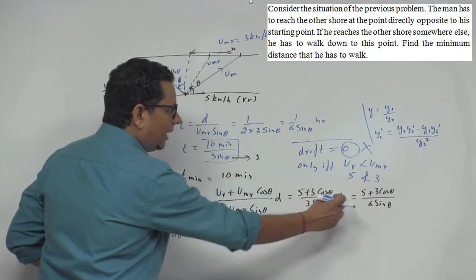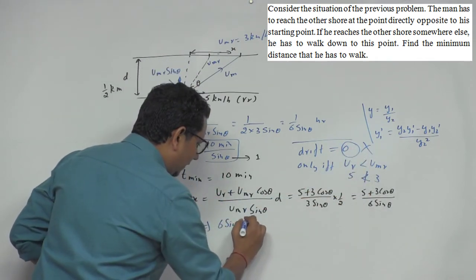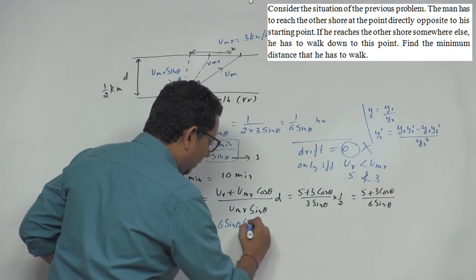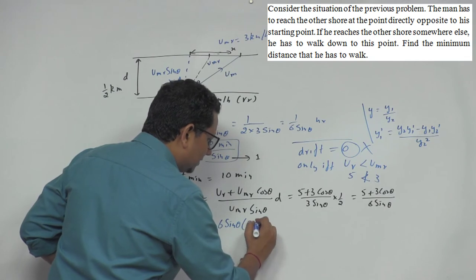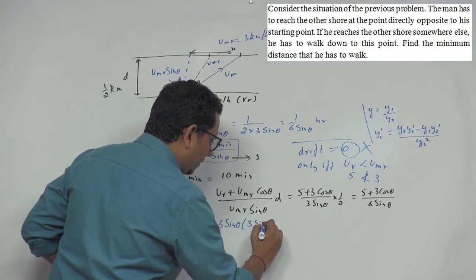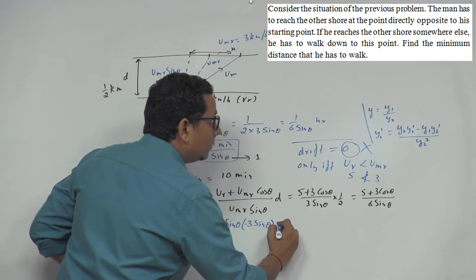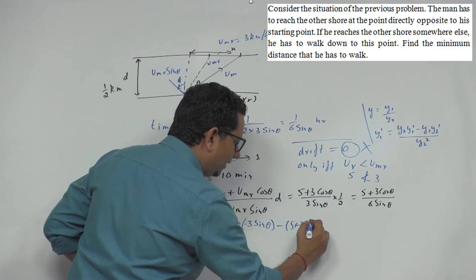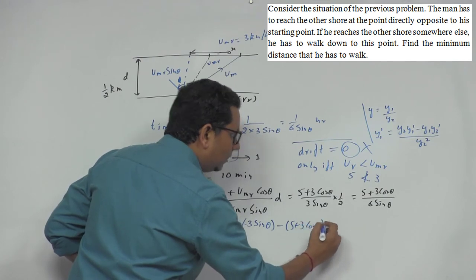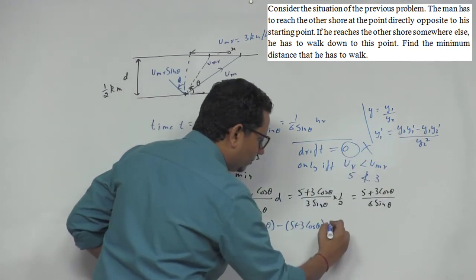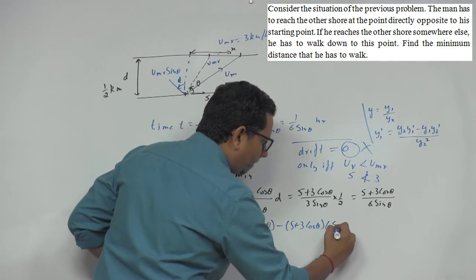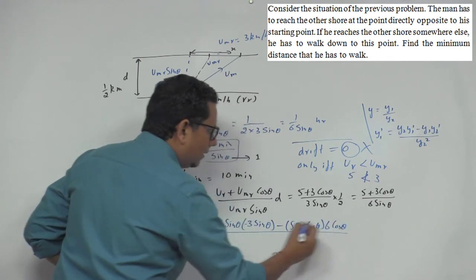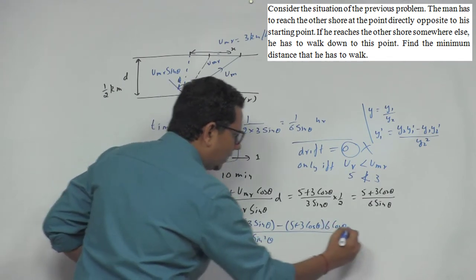So we will use this. This means when we differentiate: y2, which is 6 sin theta, multiplied by the differentiation of 5 plus 3 cos theta, that will be 0 plus 3 times negative sine, minus y1, which is 5 plus 3 cos theta, multiplied by the differentiation of y2, which will be 6 cos theta, divided by 36 sin square theta.